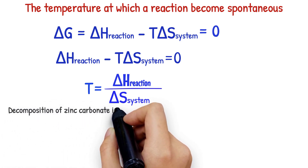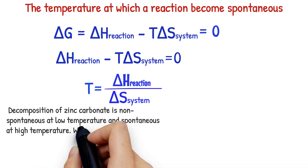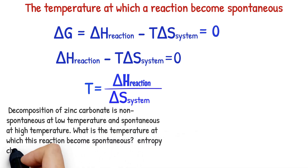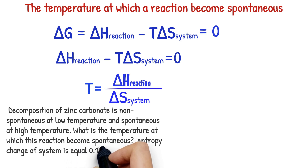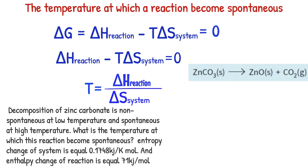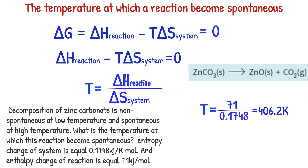Example: The decomposition of zinc carbonate is non-spontaneous at low temperature and spontaneous at high temperature. What is the temperature at which this reaction becomes spontaneous? The entropy change of the system equals 0.1748 kilojoule per Kelvin per mole, and the enthalpy change of reaction equals 71 kilojoule per mole. By replacing the data into the formula, the temperature at which this reaction will become spontaneous is 406.2 Kelvin. This is the temperature above which the decomposition of zinc carbonate will become spontaneous.